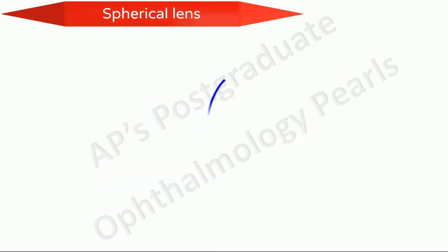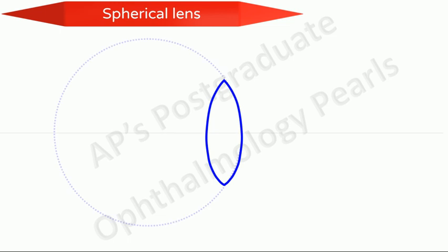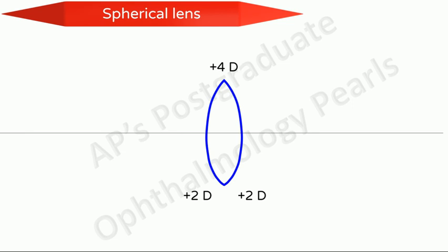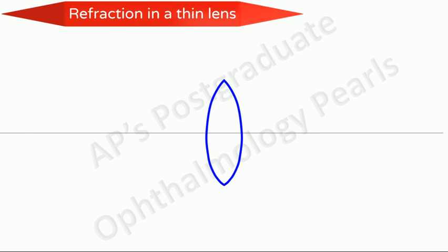A spherical lens has one or both surfaces curved in the form of a sphere. For convenience, we will discuss all optical parameters with respect to a biconvex lens. The centre of the sphere of which the lens forms a part is called the centre of curvature. The radius of the sphere is called the radius of curvature. The total vergence or refracting power of a spherical lens depends on the vergence power of each surface and the thickness of the lens. For a thin lens, the power of the lens is the algebraic sum of the powers of its constituent surfaces.